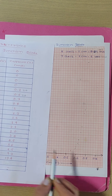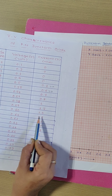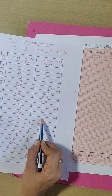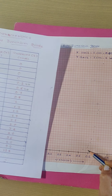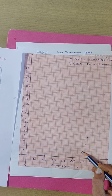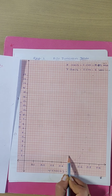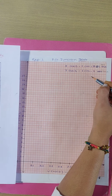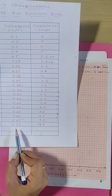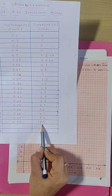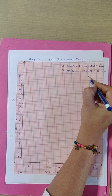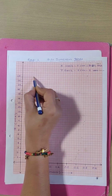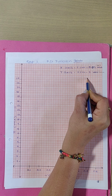In the same way, I have kept points for the other readings. For example, for 0.60 volt the current is 1.5 milliamperes, so this point is at 0.6 volt and 1.5 milliamperes. Likewise, I have kept all the points. The maximum point is for 0.72 volt and 19.4 milliamperes.